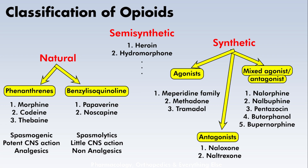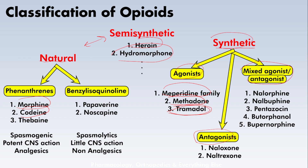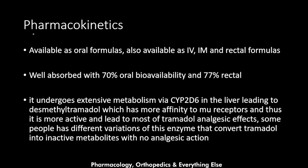Generally speaking, opioids are classified as natural, semi-synthetic, and synthetic. Examples of natural opioids are morphine and codeine; semi-synthetic examples are heroin and hydromorphone. The synthetic opioids are subdivided into agonists, antagonists, and mixed agonist-antagonists. Tramadol sits in the synthetic agonist category, alongside the meperidine family and methadone.